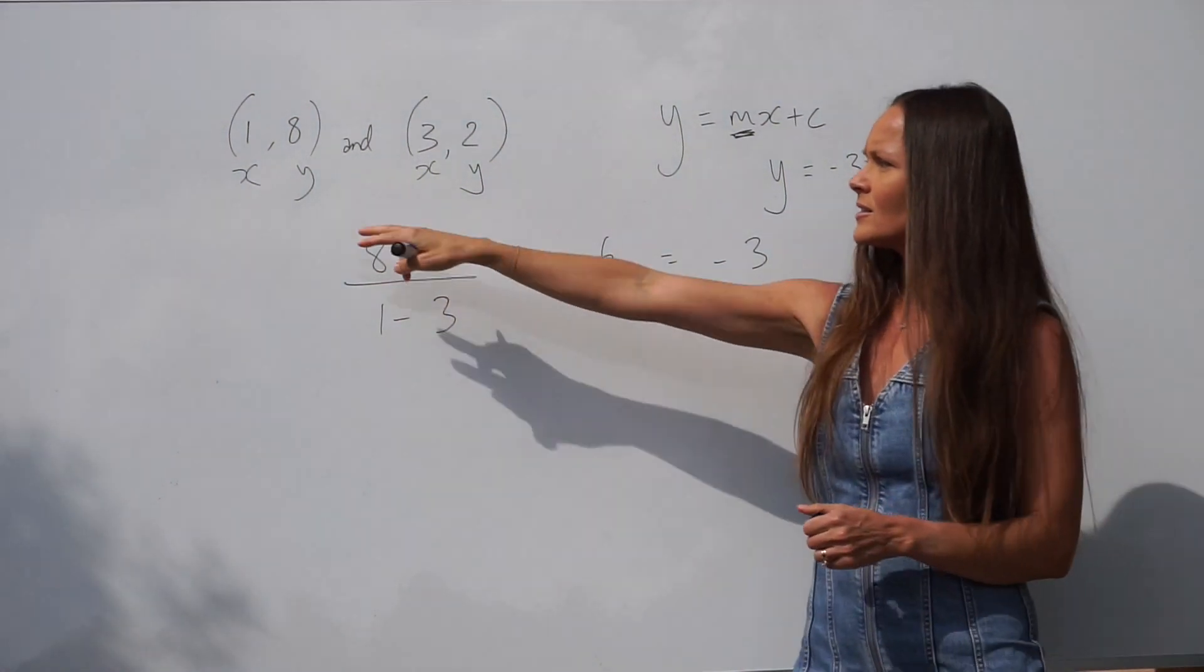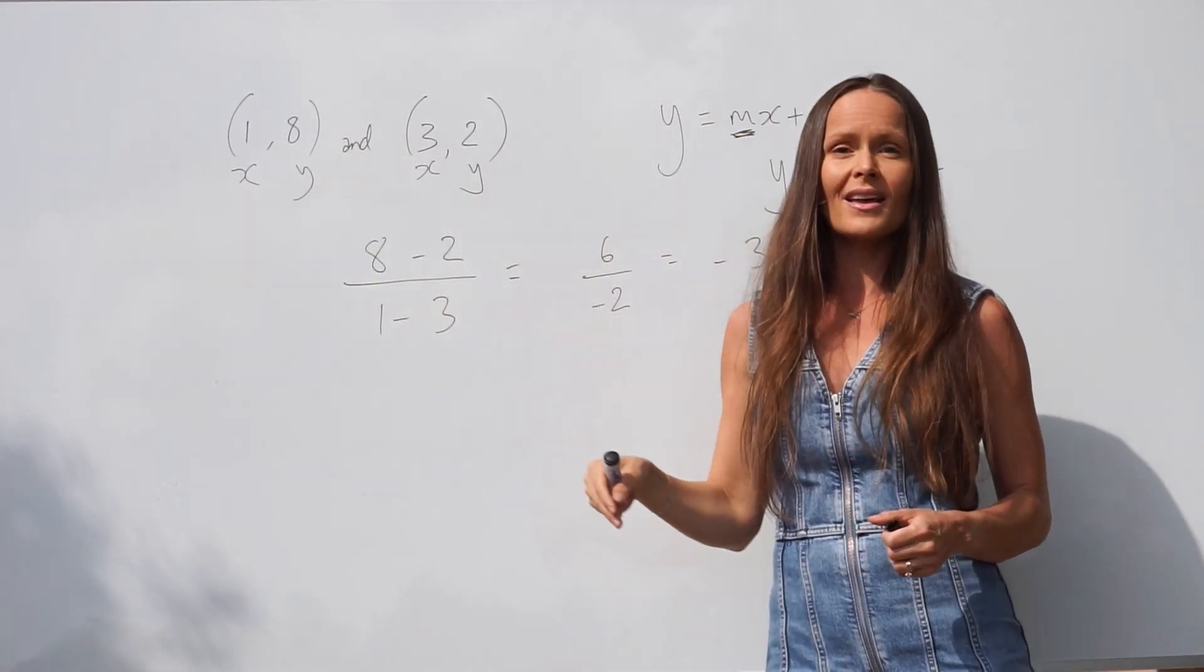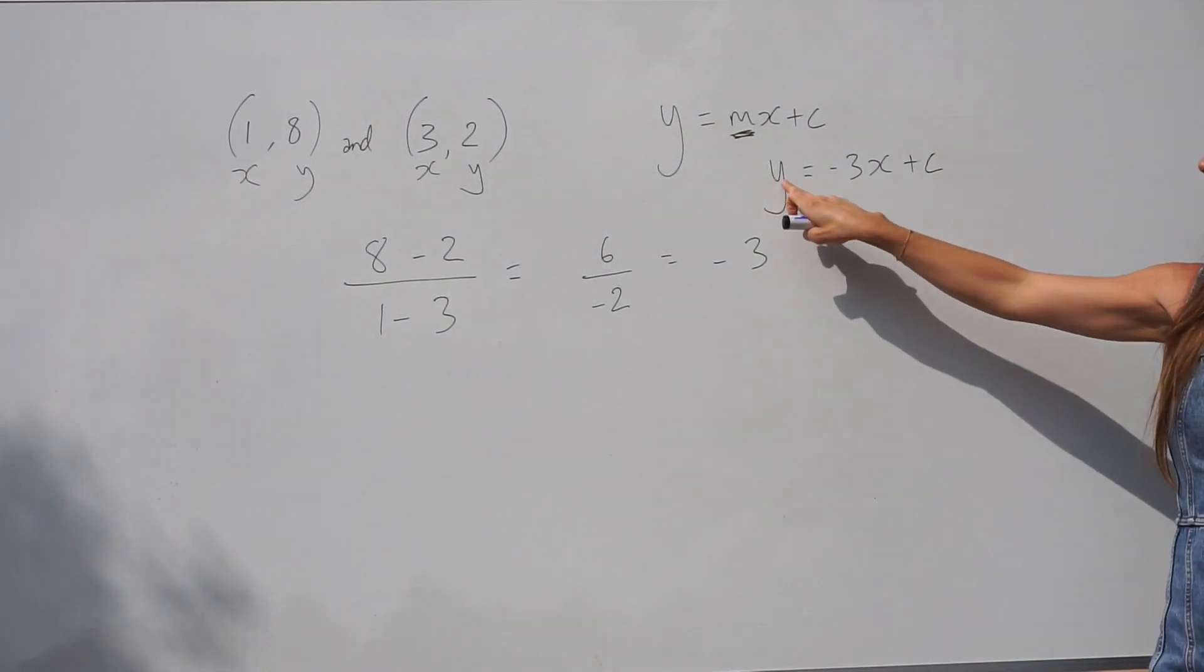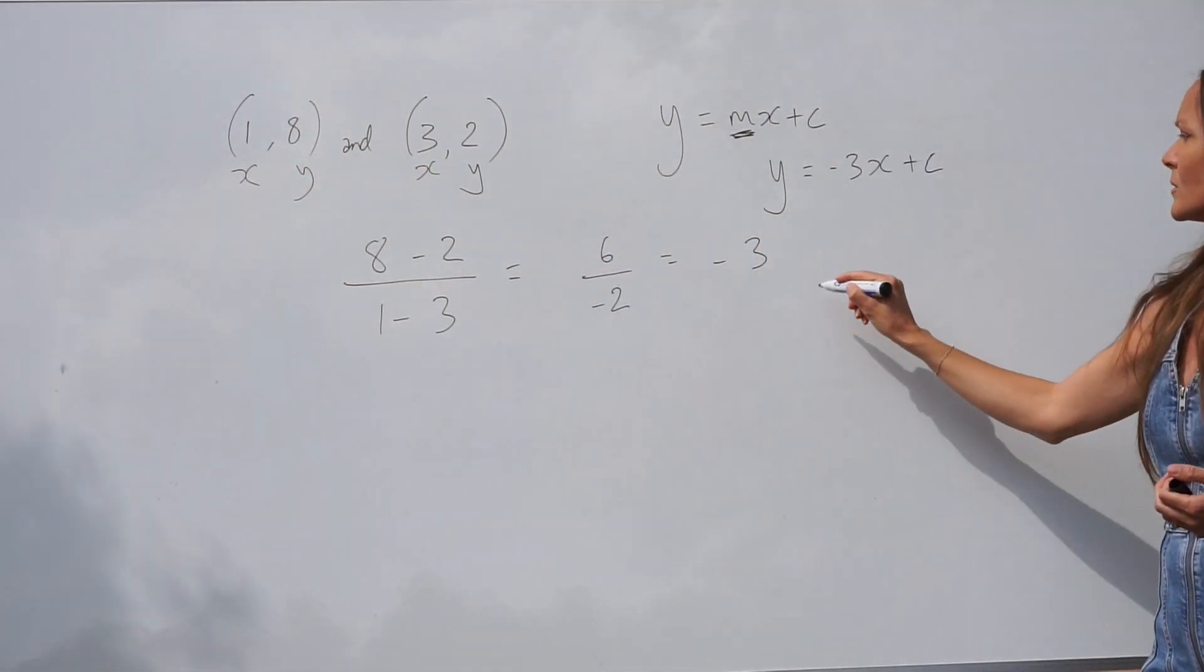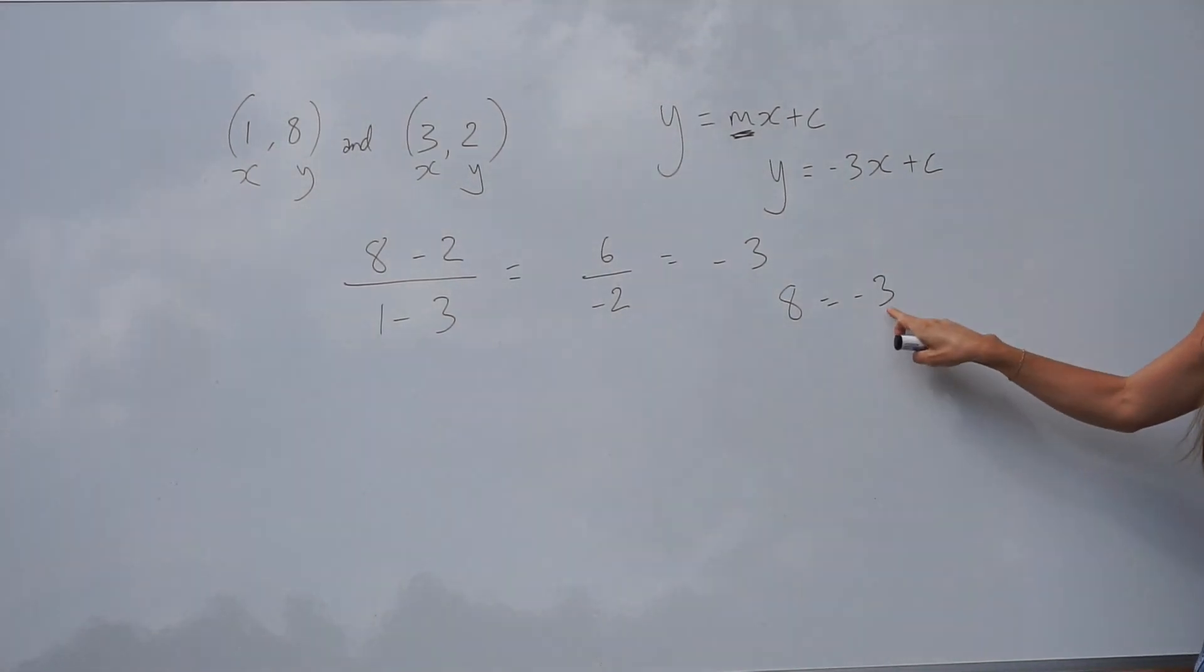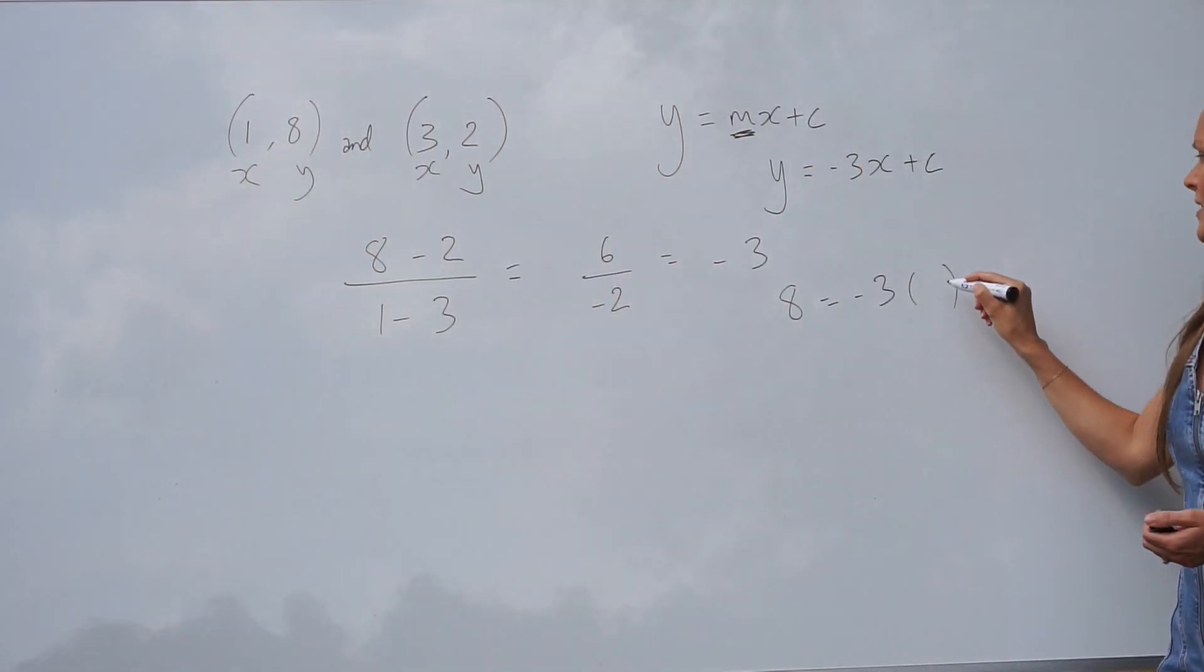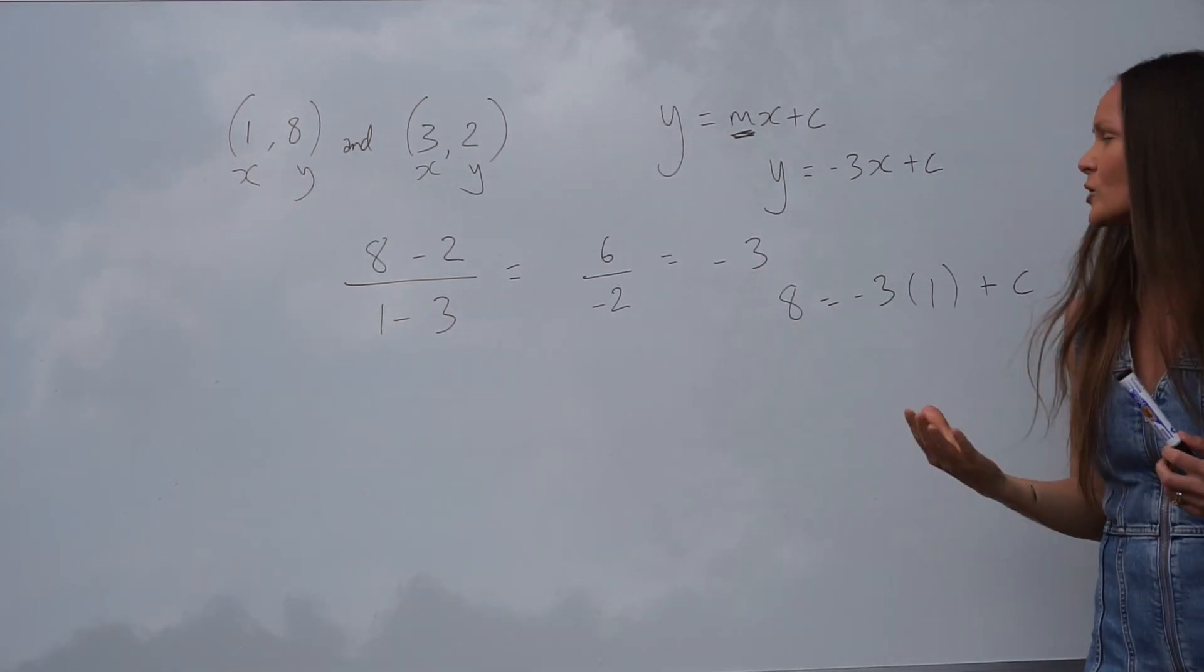Let's look at these values here. I'm just going to substitute x equals 1 and y equals 8 into the equation. So instead of writing down y equals, it becomes 8 equals, because y is equal to 8. The negative 3 is still there. Remember, that's fixed. That's the gradient of the line. And then in place of x, we need to write 1, because the x value here is 1. So I'm just switching in the y and the x values. And plus c, well, that just stays as it is for the moment, because that's what we're trying to work out.